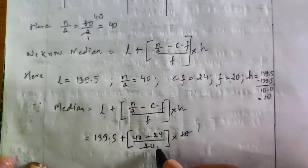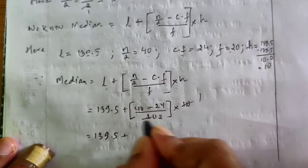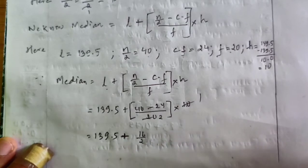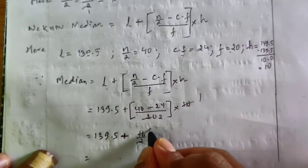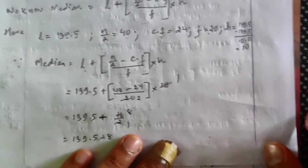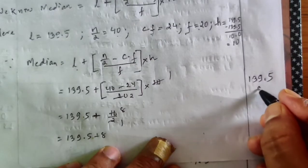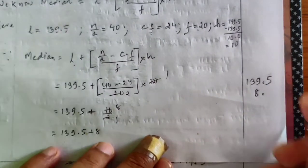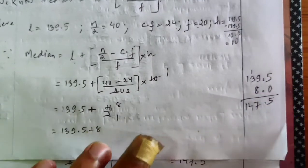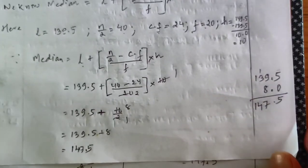Median = 139.5 + (40 − 24) / 20 × 10. Cancel 10 and 20: 40 minus 24 is 16, divided by 2 equals 8. In rough work: 139.5 plus 8 — point must be in the same line — 9 and 8 is 17, so it becomes 147.5. Therefore the value of median is 147.5.